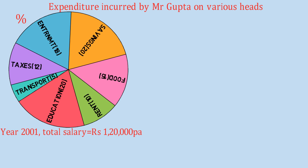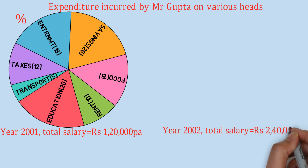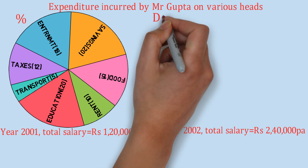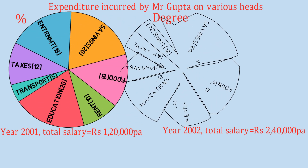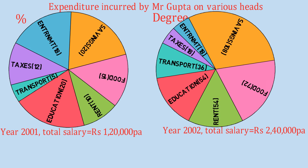Now in year 2002, the salary becomes 2,40,000. The expenditure on various heads is expressed in degrees this time: savings 108°, food 72°, rent 54°, education 54°, transport 36°, taxes 18°, entertainment 18°. So for one year the distribution is given percentage-wise and for the other year it is given degree-wise.